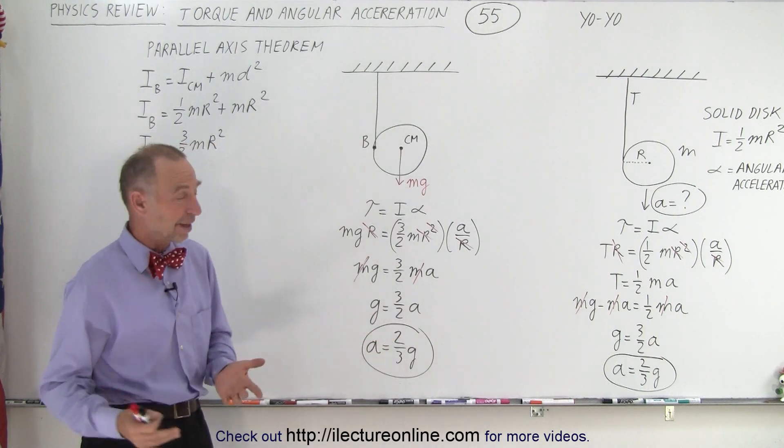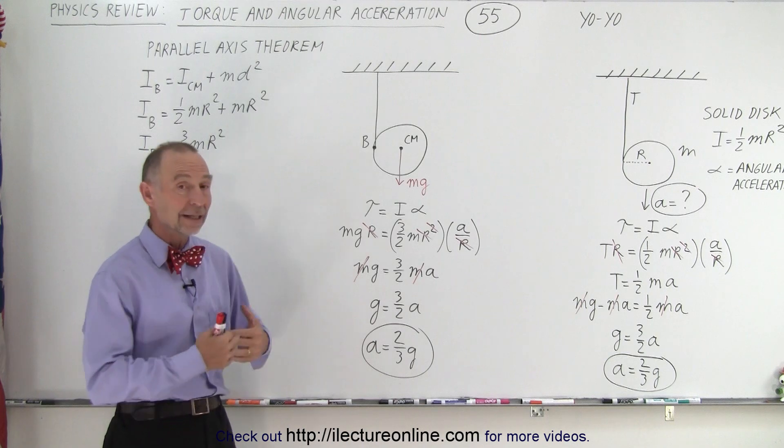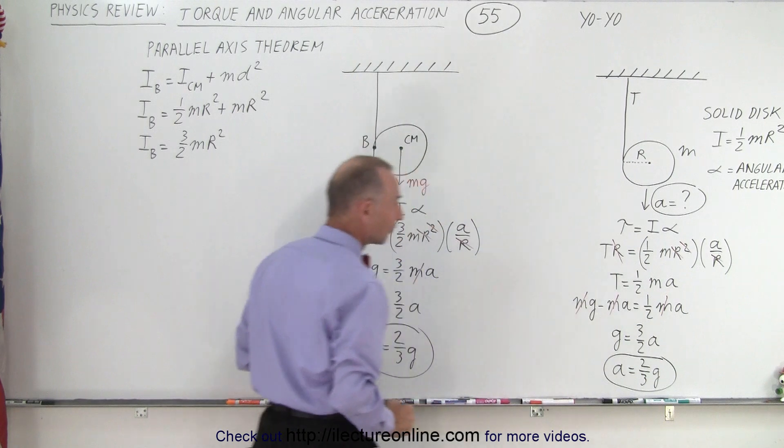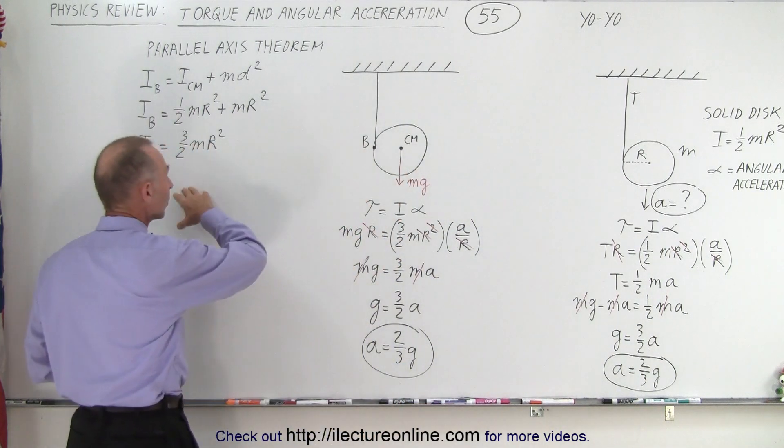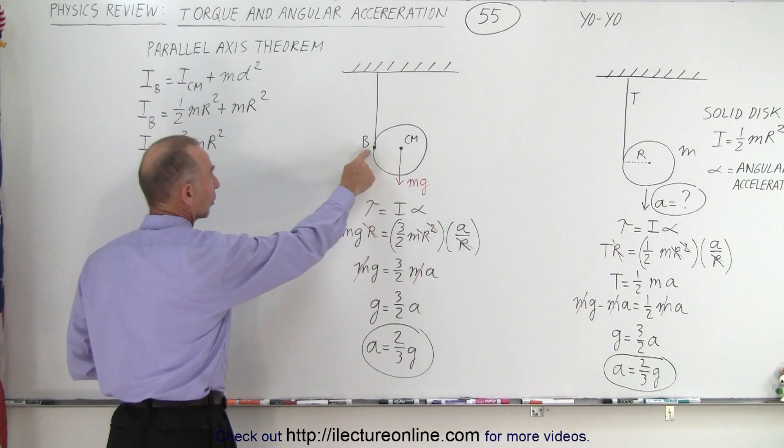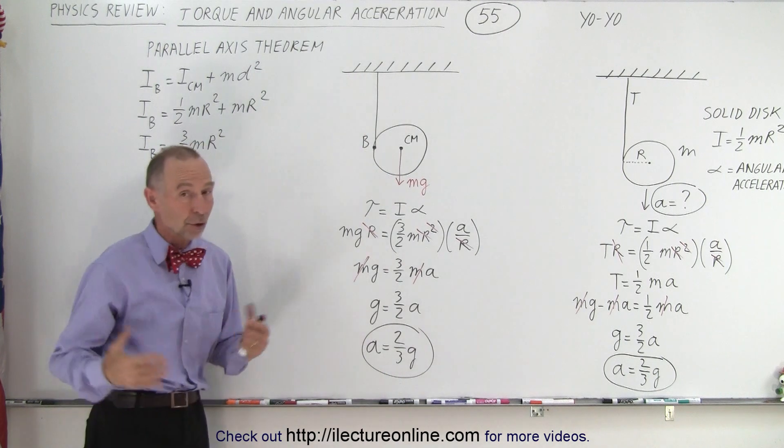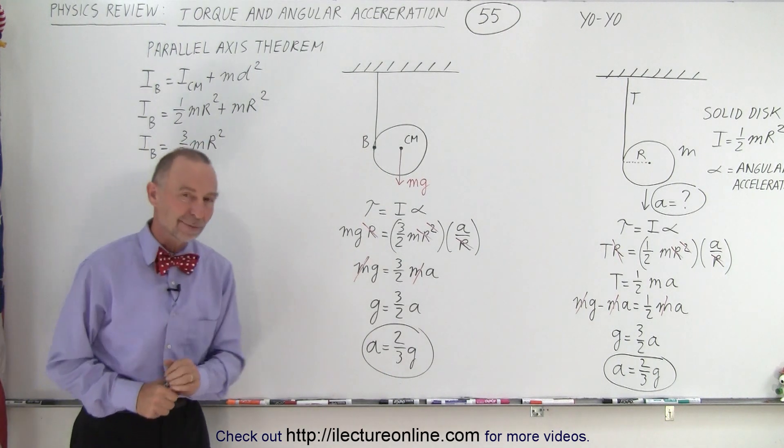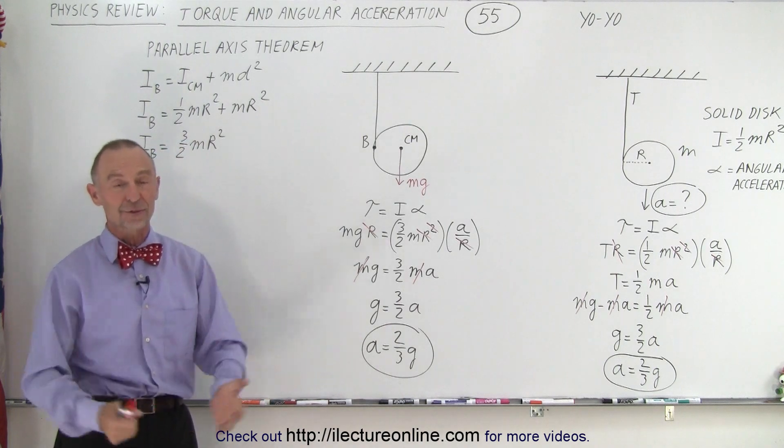Of course, we expect the same result, but you can see a good example of using the yo-yo with the traditional method of solving for the acceleration compared to the non-traditional method by moving the point of rotation to the edge of the yo-yo. You end up with the exact same result using torque equals I times alpha. And that is how it's done.